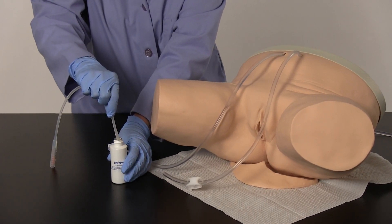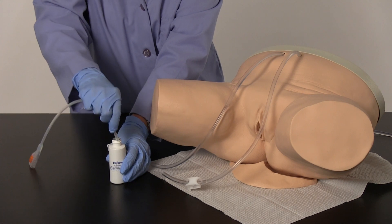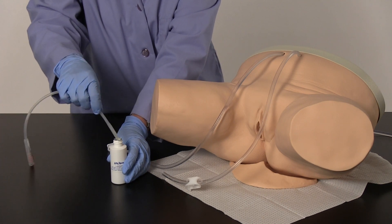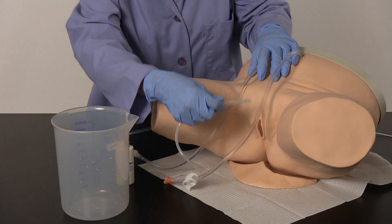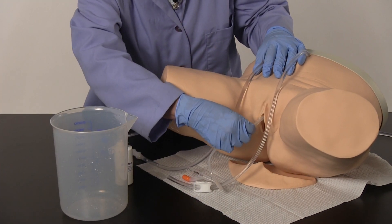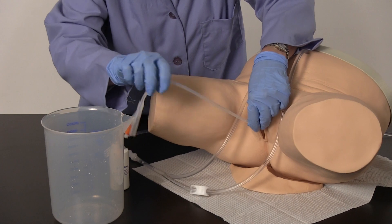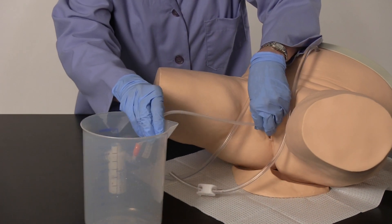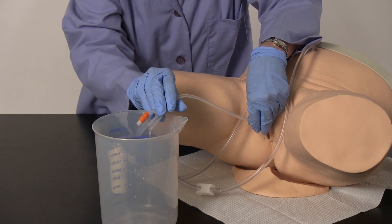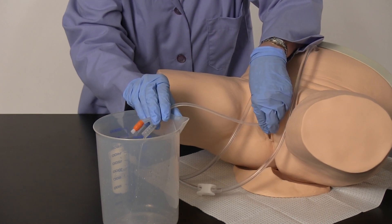Generously lubricate the supplied 16 French silicone Foley catheter. Slowly insert the lubricated catheter into the urethra and through the simulated sphincter. With experience, you will feel a pop as the catheter passes into the simulated bladder. Continue inserting until the water flows from the catheter.